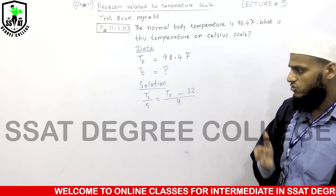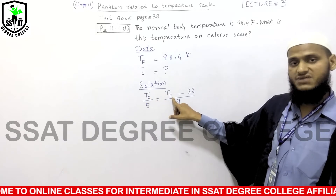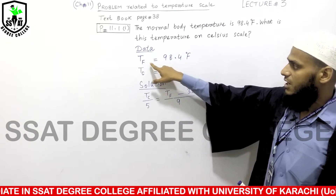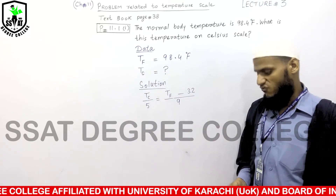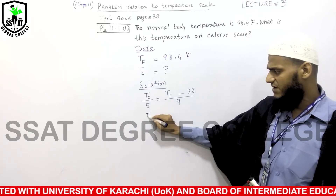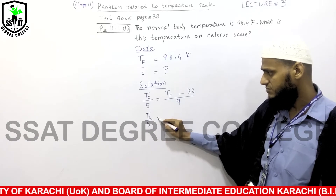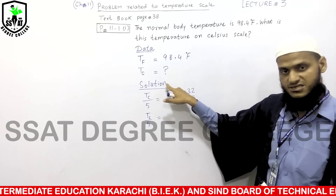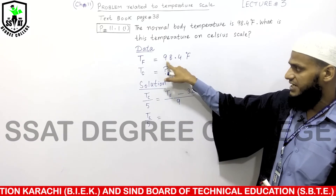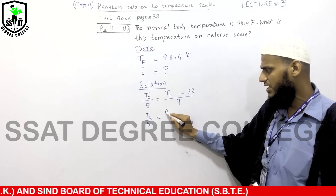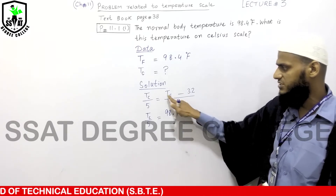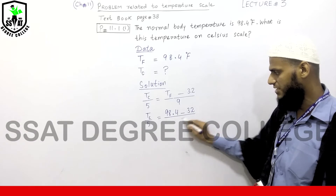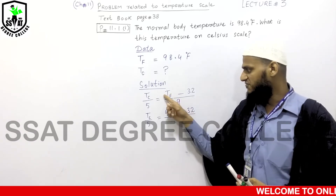This formula can be used in both situations — you can convert Celsius to Fahrenheit, and Fahrenheit to Celsius. In this question we need to convert Fahrenheit to Celsius. Putting in the values: TC/5 = (TF − 32)/9, and replacing TF with 98.4.